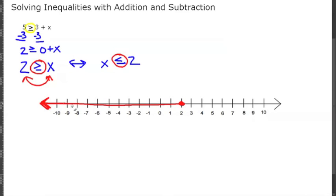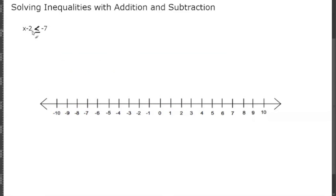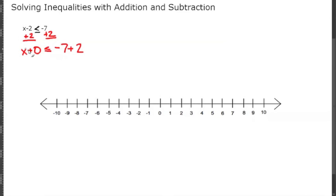For our next problem we have x minus 2 is less than or equal to negative 7. We want x by itself, so we'll add 2 to both sides to get rid of the negative 2. That gives us x is less than or equal to negative 7 plus 2, which is negative 5. So we find negative 5 on the number line, circle it, and since x is less than or equal to negative 5 we shade in that circle.